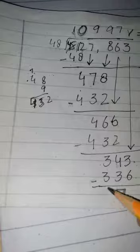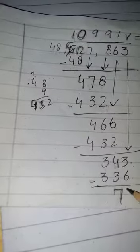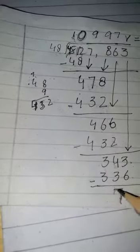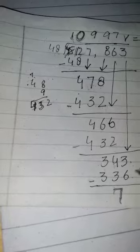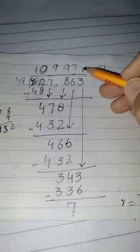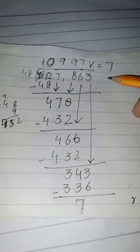Ab 48, 7s are 336. So hum ne is ko subtract kiya. To hamare paas remainder kya aaya 7 aur remainder ko hum ne is ke answer ke sath write kar dena hai.